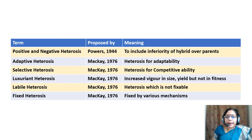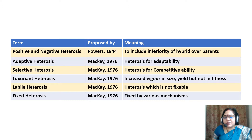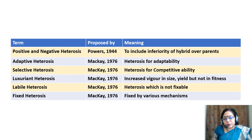Adaptive heterosis was proposed by Mac K in 1976 for heterosis related to adaptability. Selective heterosis, also by Mac K in 1976, refers to heterosis for competitive ability. Luxuriant heterosis, also by Mac K in 1976, increases vigor in size but not in fitness and is utilized in flowering plants. Labi heterosis, proposed by Mac K in 1976, refers to heterosis which is not fixable. Fixed heterosis, also by Mac K in 1976, is fixed by various mechanisms.